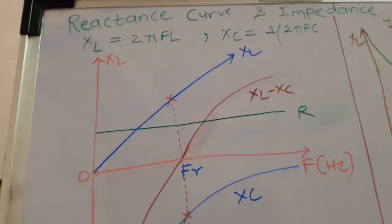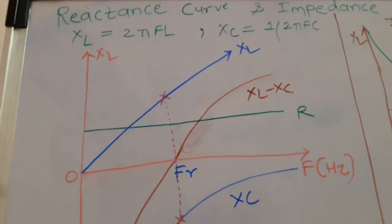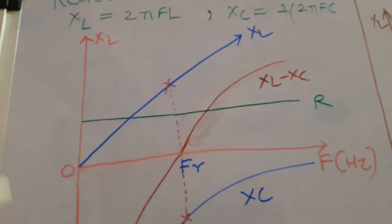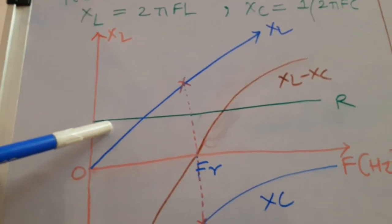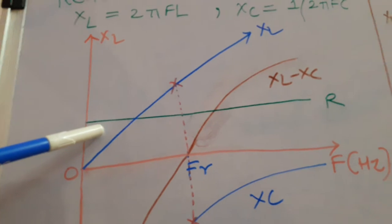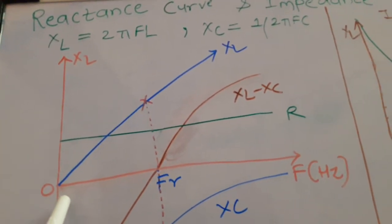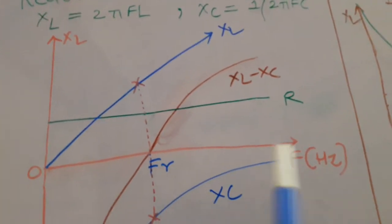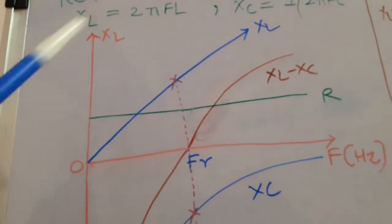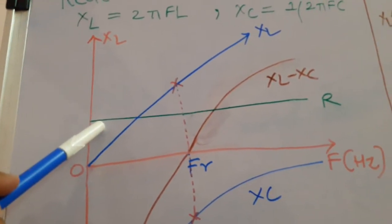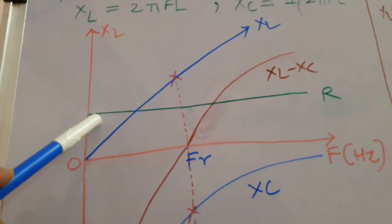Resistance in the circuit is not dependent on frequency, so it is shown as a green colored straight line. Whatever the value of frequency — zero or infinity — there is no effect on this green line representing resistance.